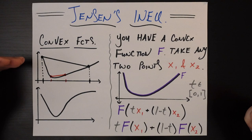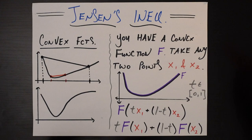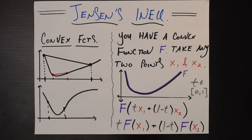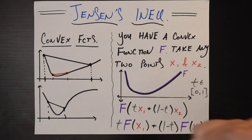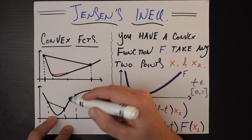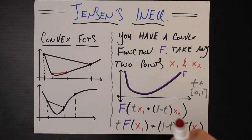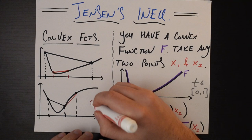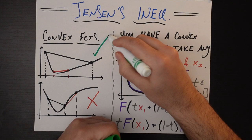No matter which two points you would have chosen on this top function, it's always above the function itself, and therefore this top function is a convex function. For this bottom function, there are still pairs of points where this would be true. But crucially, it's not true for any pair of points I choose. If I connect a different pair of points, you can see that the entirety of that red line is actually below my function. Because I could find even one counterexample, this bottom function is not convex.